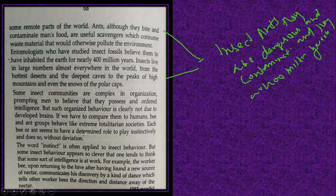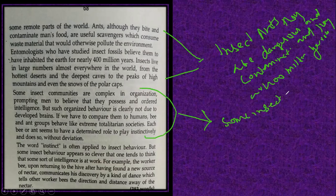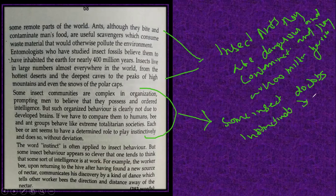Bees and ants live in a group like a totalitarian society. Each bee or ant seems to have a determined role to play instinctively and does so without deviation. Some insects do their job instinctively — not through a developed brain.